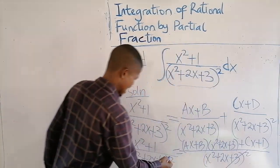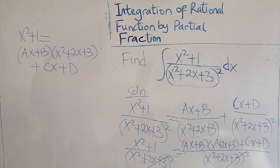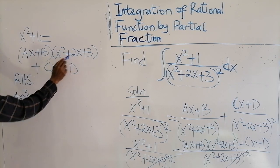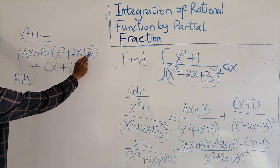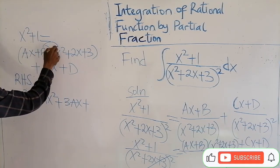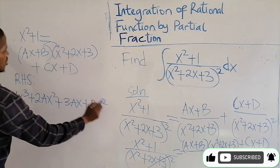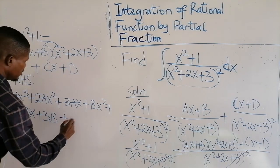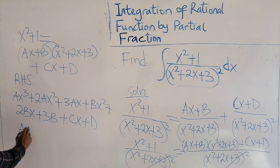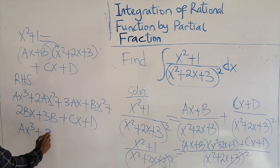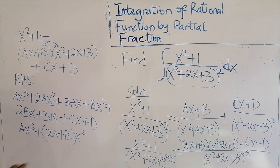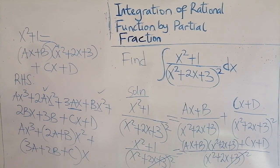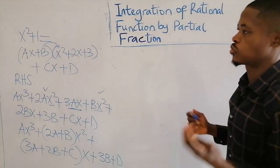The denominator cancels out, so the numerator on the left equals the numerator on the right. Let's do the expansion of the right-hand side: we get ax³, plus 2ax², plus 3ax, plus b times the quadratic giving b x², plus 2bx, plus 3b, plus the cx and d terms. Arranging the terms, we collect by powers of x.